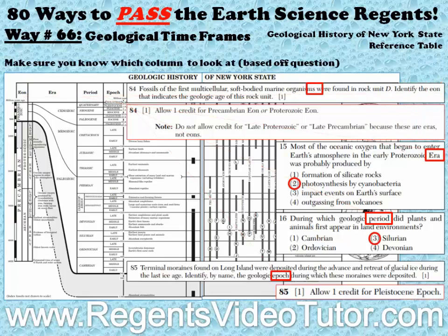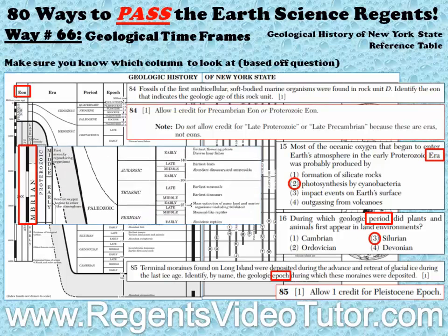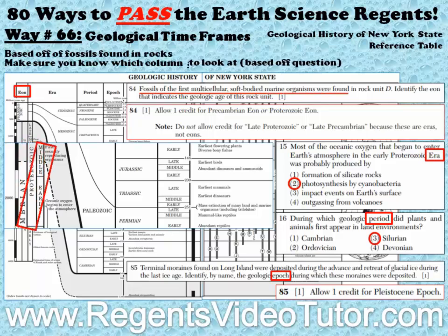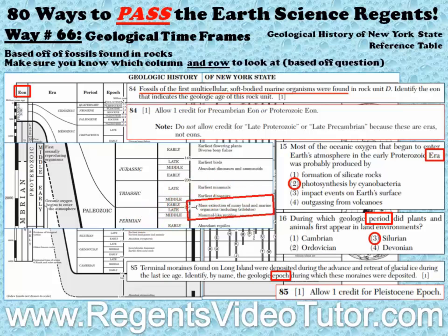For the Eon question, Precambrian or Proterozoic was the answer because fossils of the first multicellular, soft-bodied marine organisms were found due to the mass extinction of many land and marine organisms.